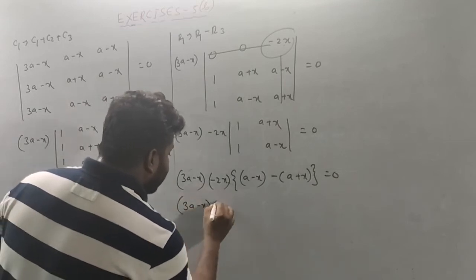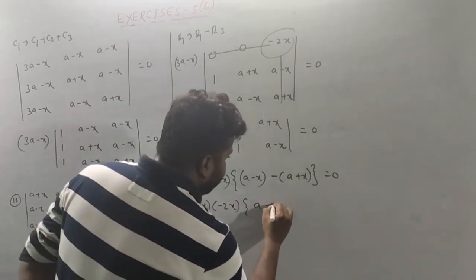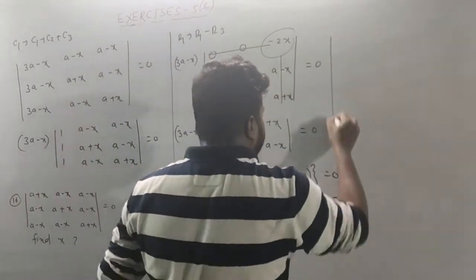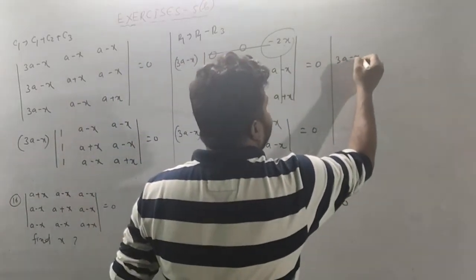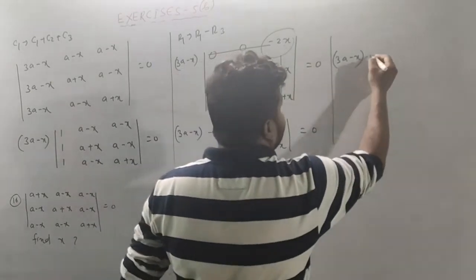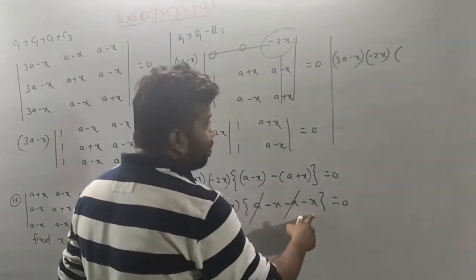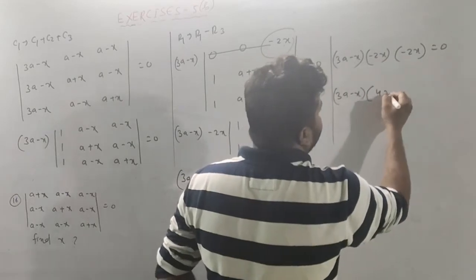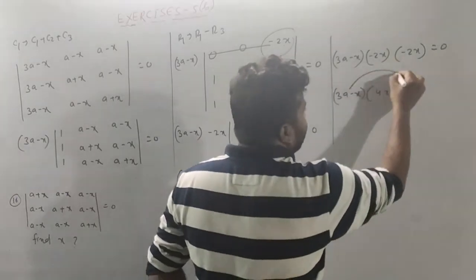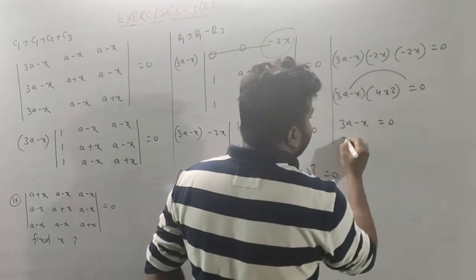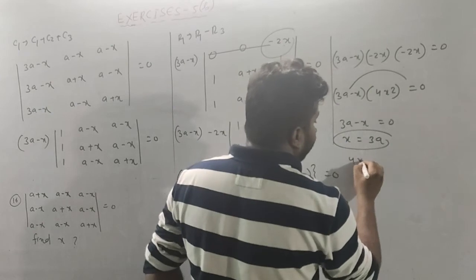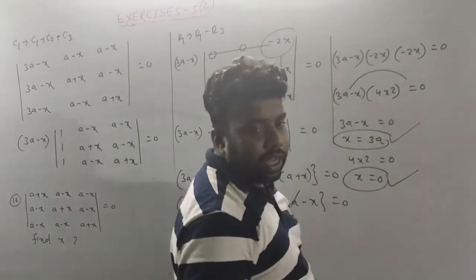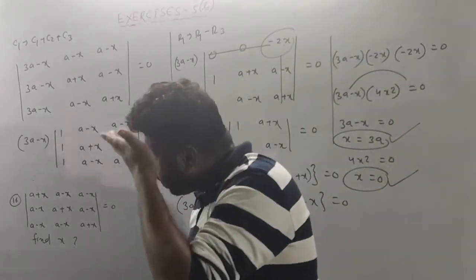3a minus x minus 2x: so a minus x minus a minus x equals 0. The constant terms cancel. So 3a minus x times 4x squared equals 0. Therefore 3a minus x equals 0 or 4x squared equals 0, giving x equals 0. So 3a minus x equals 0. Questions 13, 14, 15, 16 complete.